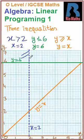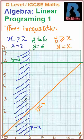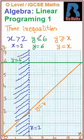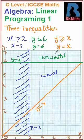The next inequality is y less than or equal to 6. Since there is an equal sign, this line will be dark or bold. Since it is less than, the region below this line is the wanted region, and the region above is unwanted, so we will shade the unwanted region above.